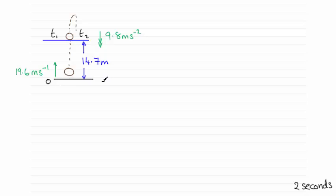That sketch would look something like this, where I've got the ground and O is this point on the ground. Remember the stone was originally projected upwards with a speed of 19.6 meters per second. And I've got the acceleration due to gravity, 9.8 meters per second squared, acting downwards.